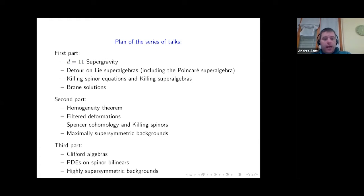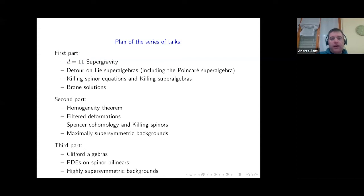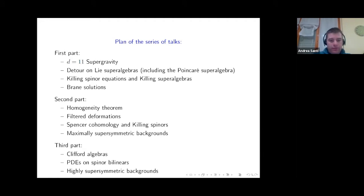Just a glimpse of what's coming next time: in the second part, I will focus more on structural properties of supergravity backgrounds. We'll see the so-called homogeneity theorem, play with filtered deformations, and explain how Killing spinors can be interpreted from a cohomological point of view. Then the maximally supersymmetric backgrounds, which are the most important solutions in supergravity. In the last part, I will focus on supersymmetric backgrounds which are not maximally supersymmetric but still highly supersymmetric.